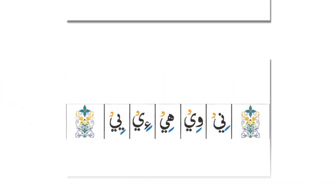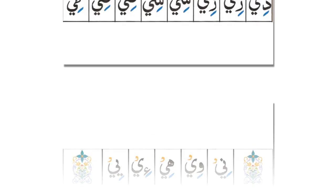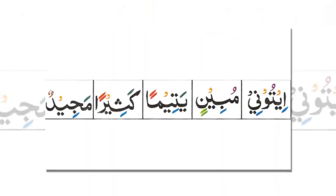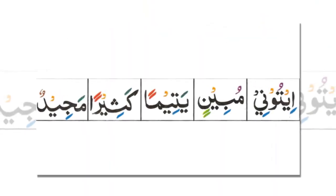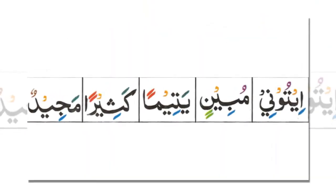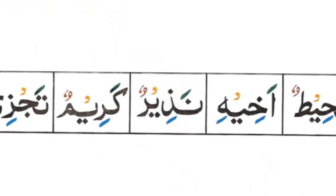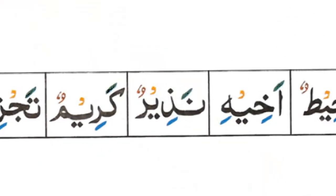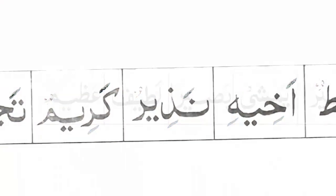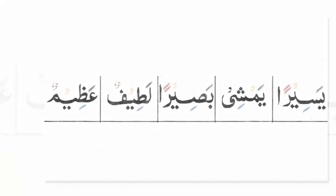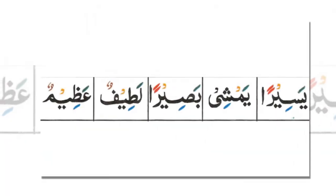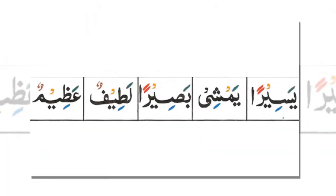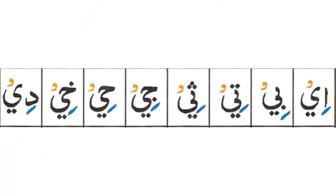Okay, lesson 16 — this one you have the alif and the ya, exactly like lesson 15, but this time there's a kasra, there's a zair. So this sound is not short and quick; this sound is lengthened for a second. Okay, so the sound is 'ee'.